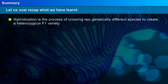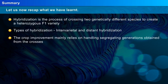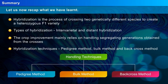Summary: Hybridization is the process of crossing two genetically different species to create a heterozygous F1 variety. Hybridization can be categorized into two types — intervarietal and distant hybridization. Crop improvement mainly relies on handling segregating generations obtained from the crosses. Self-pollinated crops involve hybridization techniques like pedigree method, bulk method, and back cross method.